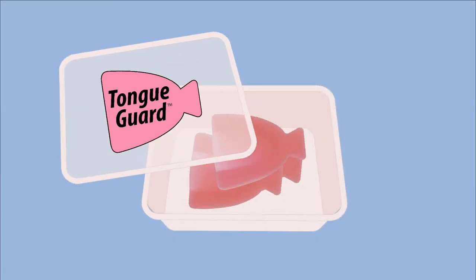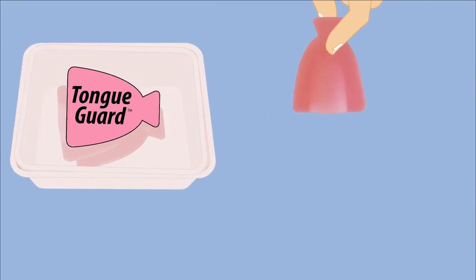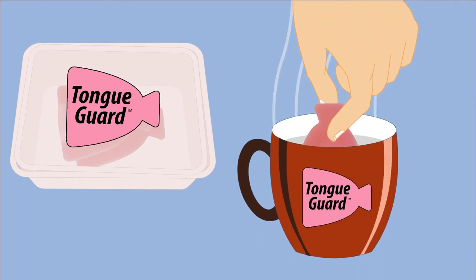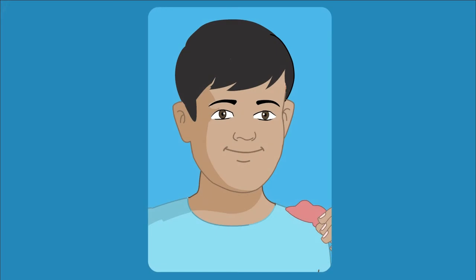Each tongue guard order comes with three guards. To use, place the guard in a cup of water at 120 degrees Fahrenheit for 10 seconds. Quickly place in the mouth and press up evenly with the tongue.